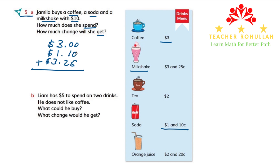Zero plus zero plus five is five. Zero plus one plus two is three. We bring down the decimal point. Three plus one plus three is seven. So the amount that she pays is $7.35.